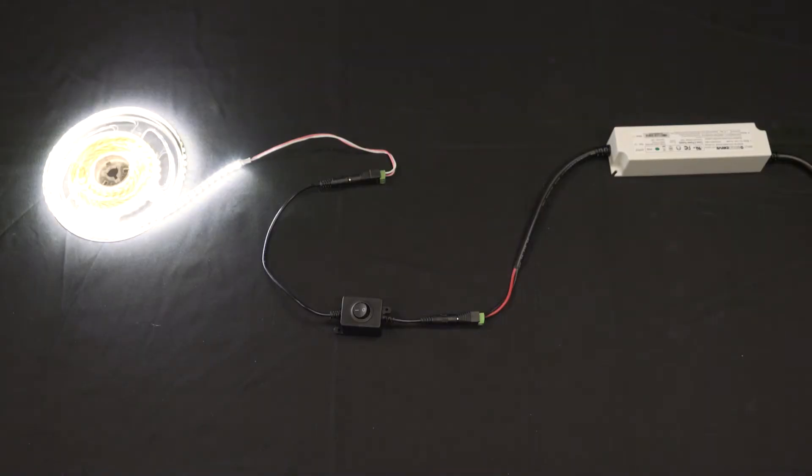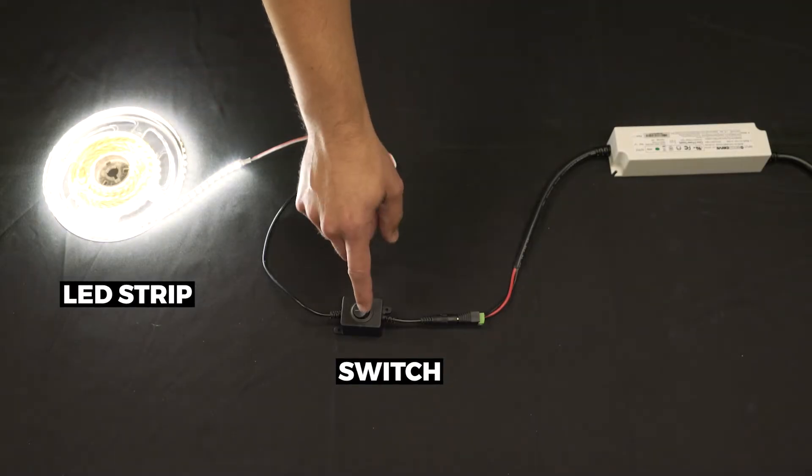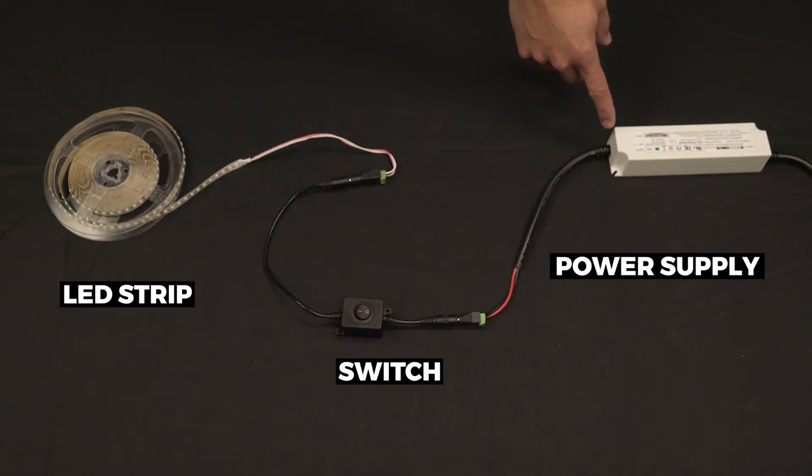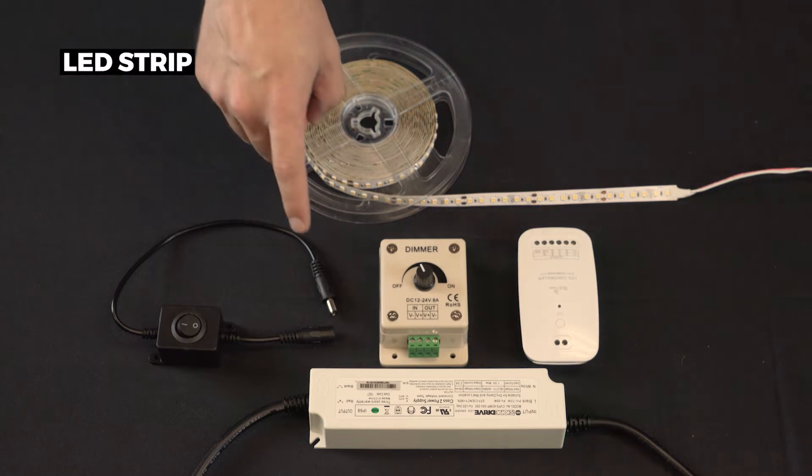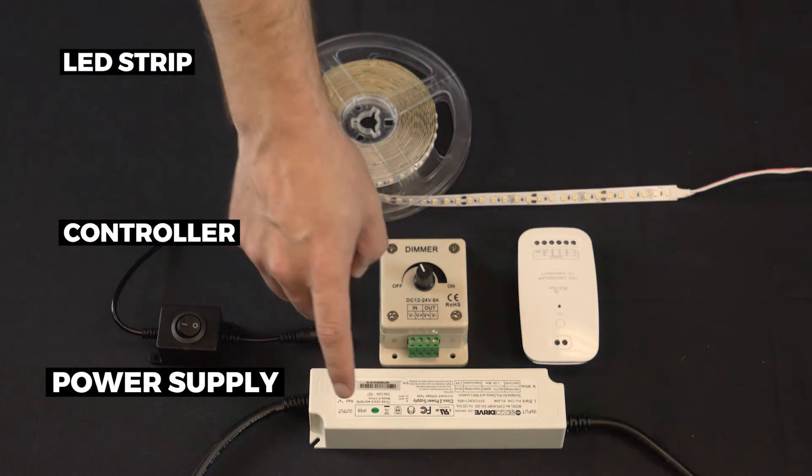Here we have a basic LED strip system. We have our LED strip connected to a switch connected to a power supply, which is then connected to 120 volts. Your LED strip system will consist of three devices: your LED strip, a control device, and a power supply.